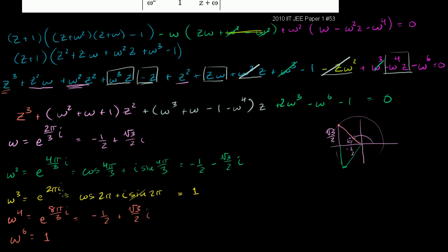Now the z² coefficient: ω² + ω + 1 = (−1/2 − (√3/2)i) + (−1/2 + (√3/2)i) + 1. The imaginary parts cancel, and −1/2 − 1/2 + 1 = 0. So the z² coefficient is 0.